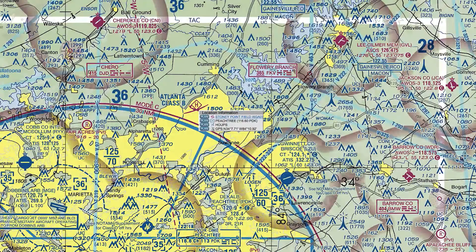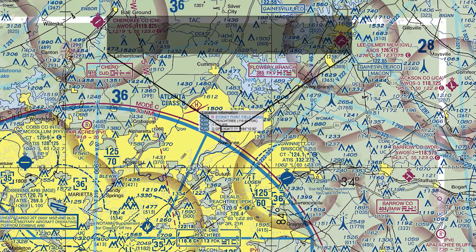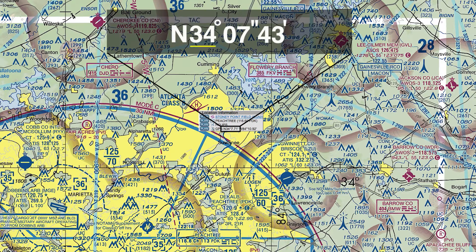So let's say I'm applying for a waiver to fly here to deviate from some regulation. Plug it into the online application like this: 34 degrees, 7 minutes, and 43 seconds.